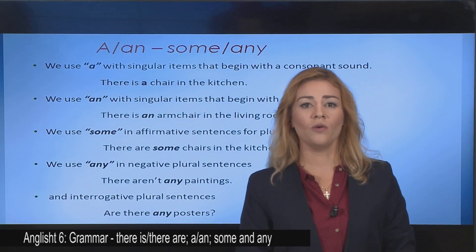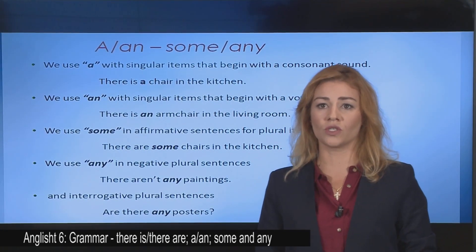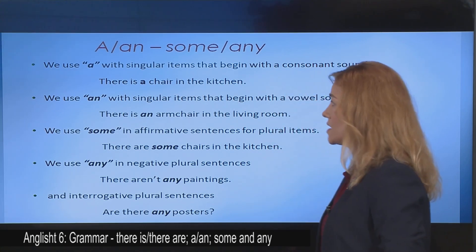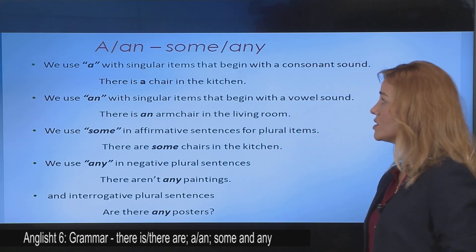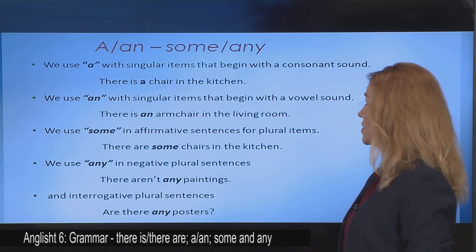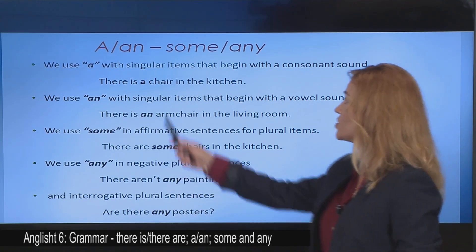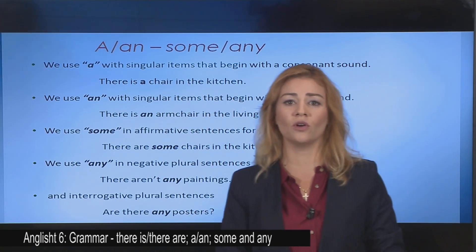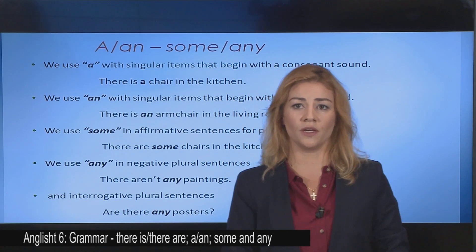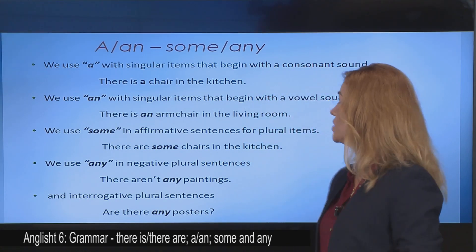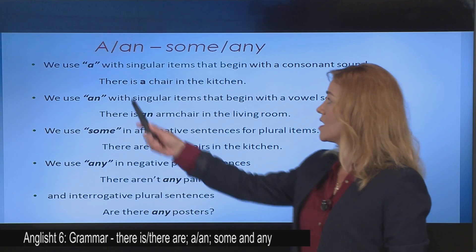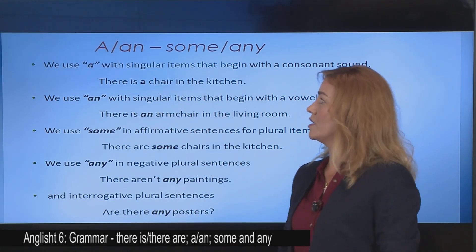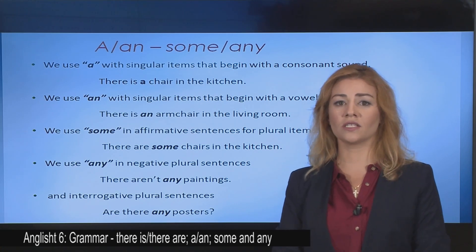Now we are going to revise and also reinforce the usage of a, an, some and any. Let's see. When do we use a? We use a with singular items that begin with a consonant sound. There is a chair in the kitchen. Pra kur përdorim një a? Ne përdorim një a me emrat e numrit njëjës që fillojnë me një bashkëtingëllore. So ch in chair is a consonant sound.